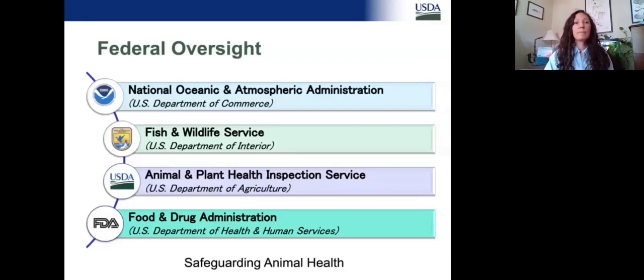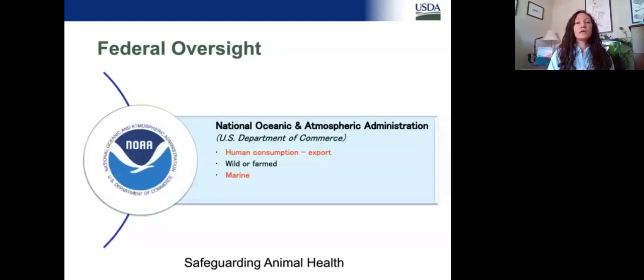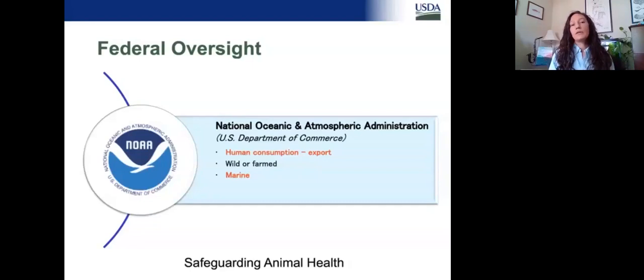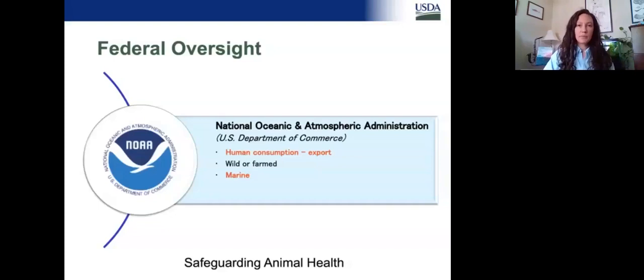For NOAA, they primarily oversee human consumption animals that are being exported. So, for example, a fisherman goes out, catches fish, comes into port, and exports them for human consumption — NOAA would be the main point of contact for those exports. The animals could be wild or farmed, including farmed from the offshore aquaculture in the exclusive economic zone that's upcoming. Principally, NOAA oversees anything that's marine — saltwater species — and for human consumption.